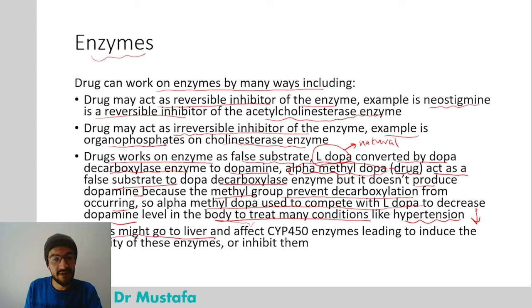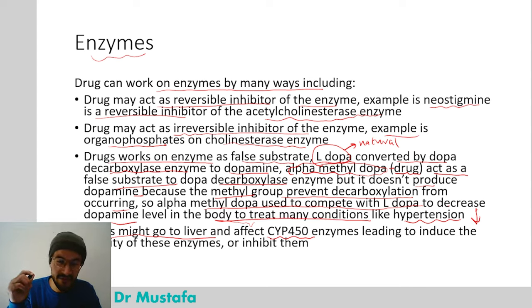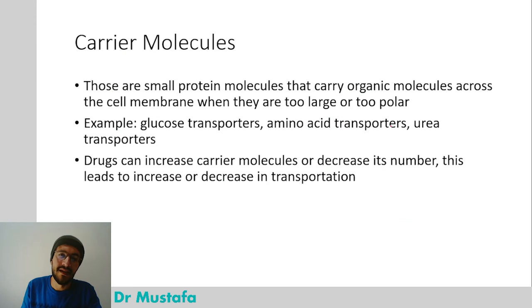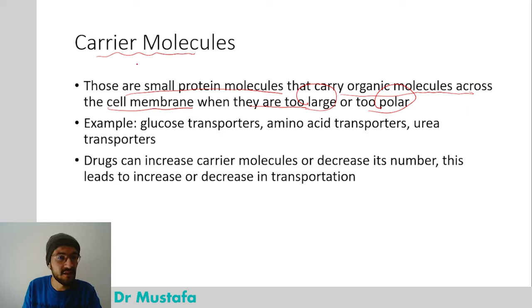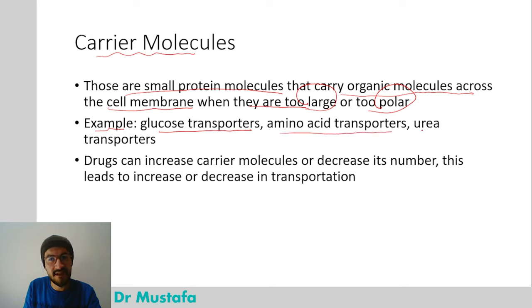Drugs may also go to the liver and affect the CYP450 enzymes, which we mentioned in the pharmacokinetics drug metabolism section, either inducing or inhibiting their activity. The final drug target is carrier molecules — small protein molecules that carry organic molecules across the cell membrane when they are too large or too polar to cross on their own. Examples include glucose transporters, amino acid transporters, and urea transporters. Drugs can increase or decrease the number of carrier molecules, leading to increased or decreased transportation.